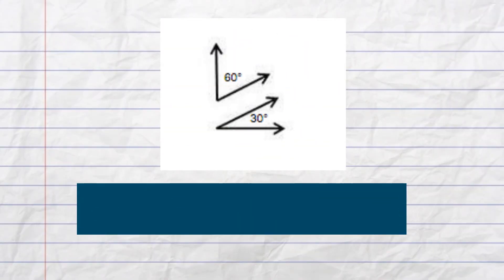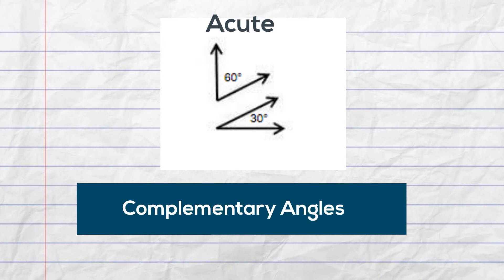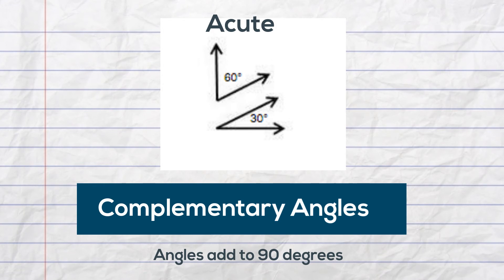In this example, you have two angles that add to 90 degrees. First, both angles are acute angles because they are less than 90 degrees, and they would be complementary angles because they would add to 90 degrees if added together.